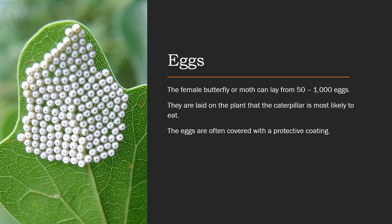The eggs are laid on the plant that the caterpillar will most likely eat, so once they're born, the mother has put them somewhere they know they can get food and they can start eating immediately. The eggs are often covered with a protective coating — I've seen them before with almost a webbing over them, which is really cool to keep them away from predators.